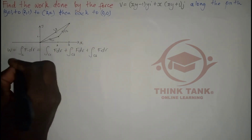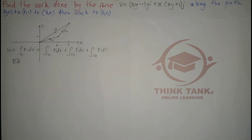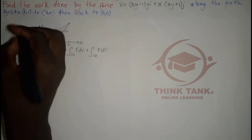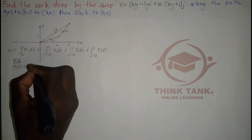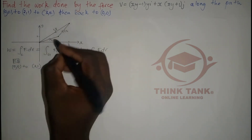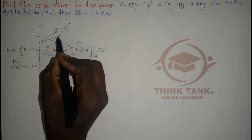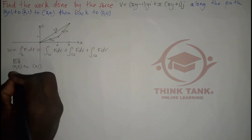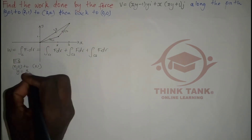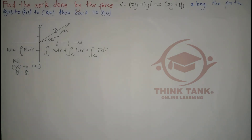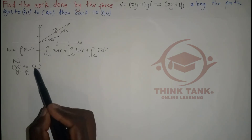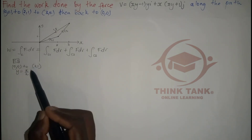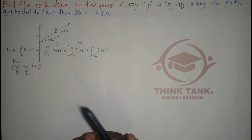Now I'm going to take a closer look at C1. For C1, it goes from (0,0) to (2,1). The equation of this line: when y equals 1, x equals 2, so the equation is y = x/2. If you don't know how to find it, you can use the gradient method with y = mx + c.